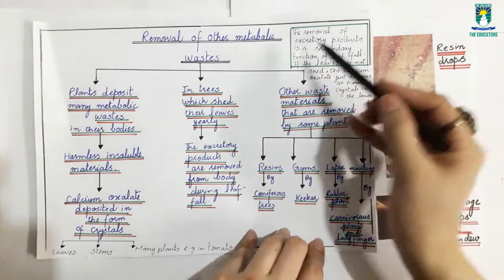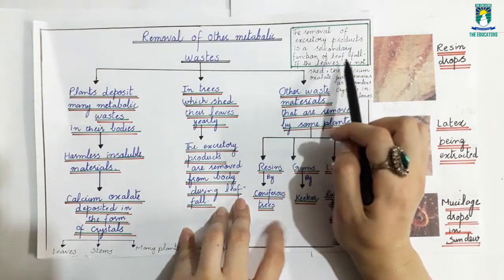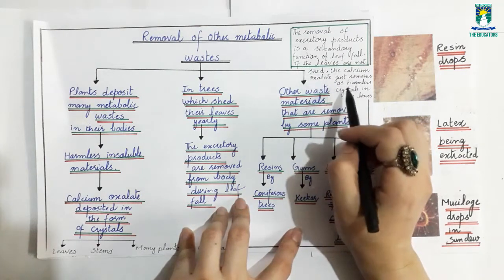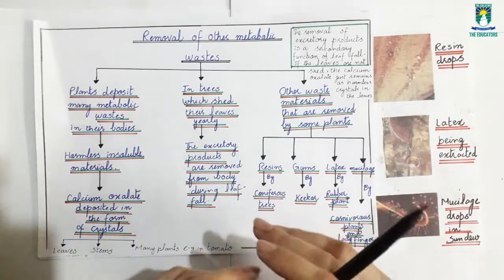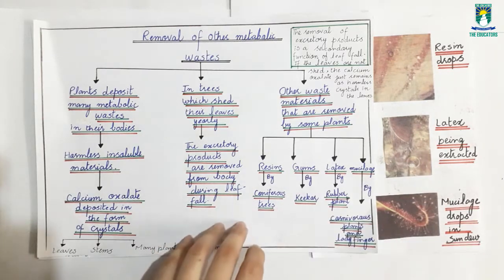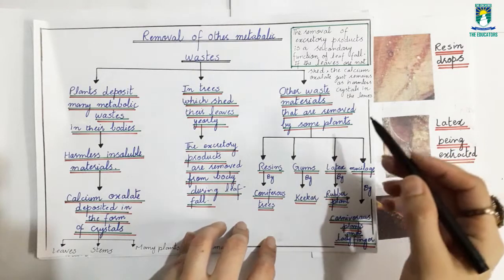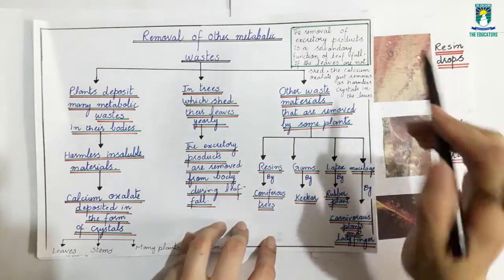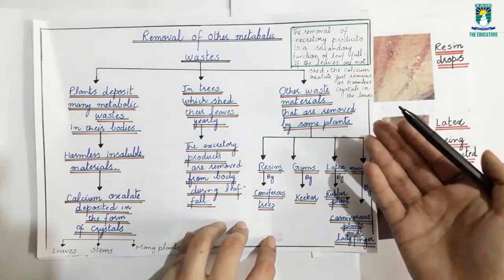An important point to add: the removal of excretory products is a secondary function of leaf fall. If the leaves are not shed, calcium oxalate just remains as harmless crystals in the leaves and does not damage them. But when the leaves fall, the metabolic waste stored in them is removed from the plant's body.